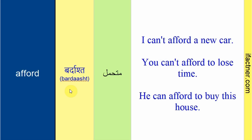Matlab ke mein ye gaadi kharidne ki berdash rukhta hoon — yani ke mere paas itne paise hai ke mein ye gaadi kharid sakta hoon. Pehla sentence hai: 'I can't afford a new car.' Matlab mein nayi gaadi afford nahi ker sakta, mein nayi gaadi ko kharidna berdash nahi ker sakta. Ek chiz batata chalun ke British English mein C-A-N apostrophe T ko 'can't' pardhte hai, aur American English mein 'can't' — to dono ka pronunciation depend karta hai ke aap kis accent follow karte hain.